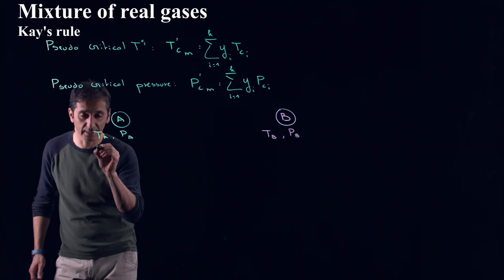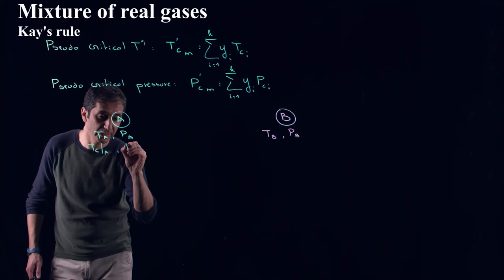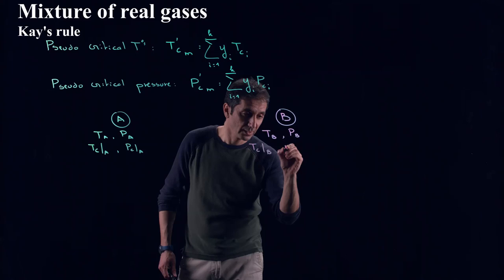Since we know gas A and B, what we can also get we can get T critical of A and P critical of A using a table. And we do the same thing for B, we can get T critical of component B and P critical of component B.